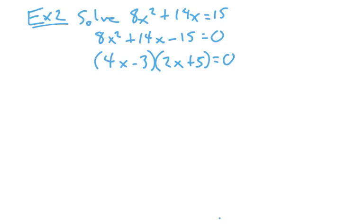4x times 2x is 8x squared, 4x times 5x is 20x, minus, product of the inside terms, minus 6x, 20x minus 6x is 14x, and minus 3 times 5 is negative 15. So, that does factor, which means you could have set each factor equal to 0.